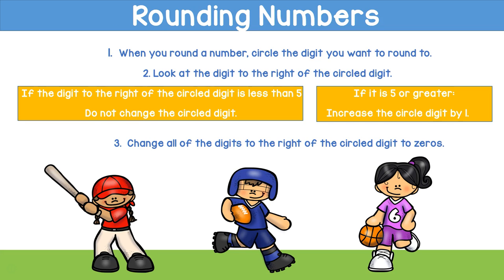So let's review. When you round a number, circle the digit you want to round to. Number two: look at the digit to the right of the circled number. If the digit to the right of the circled number is less than five, do not change the circled digit. However, if it is five or greater, increase the circled digit by one. And finally, change all of the digits to the right of the circled digit to zero.